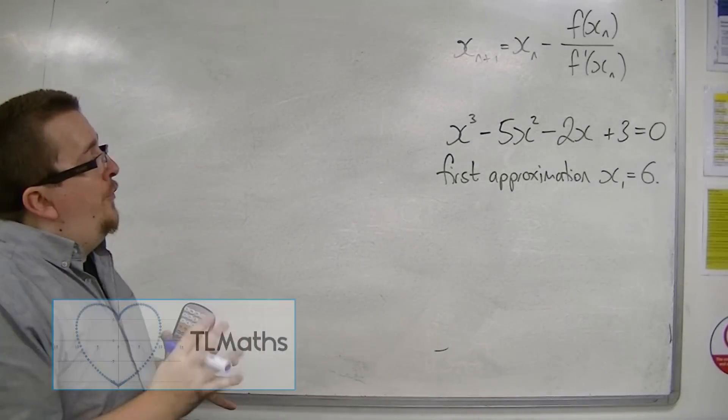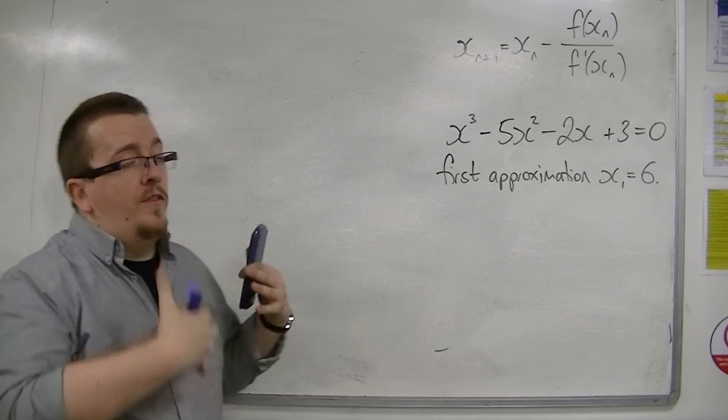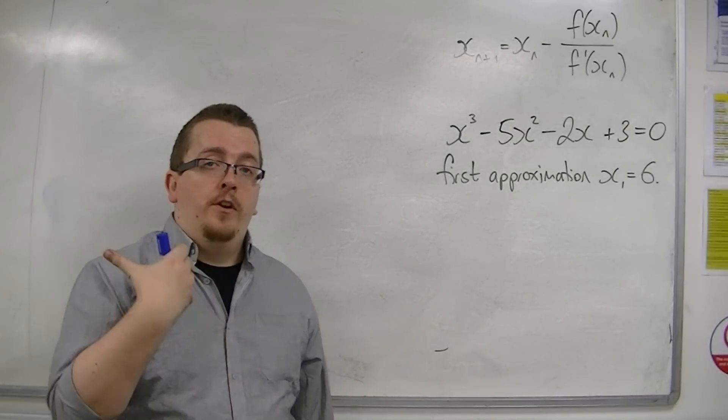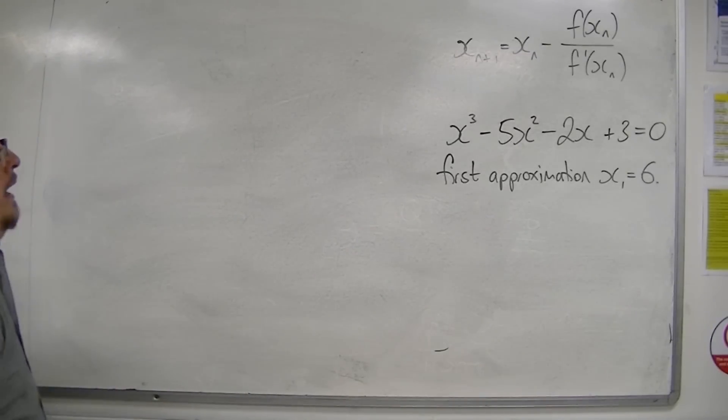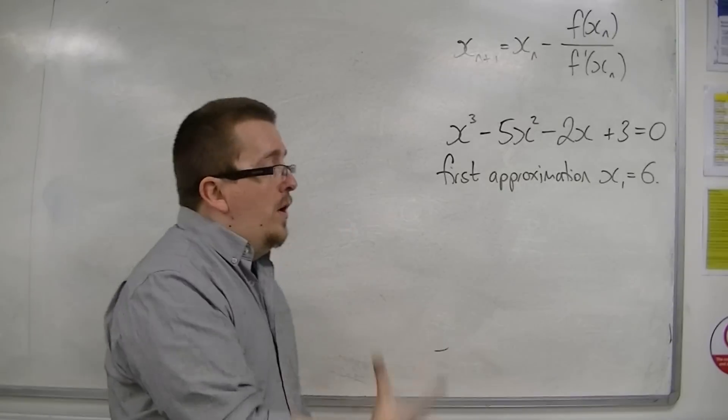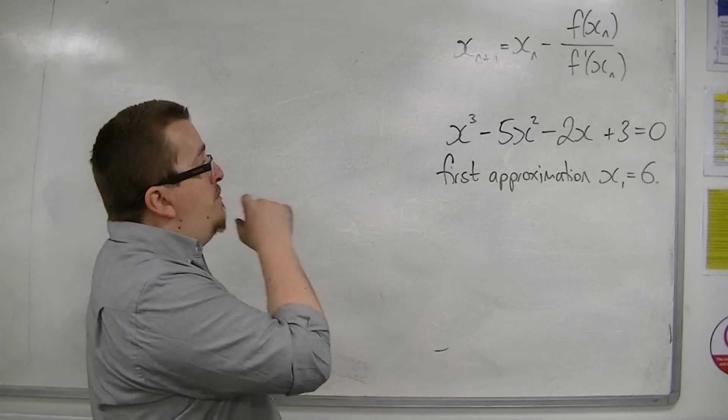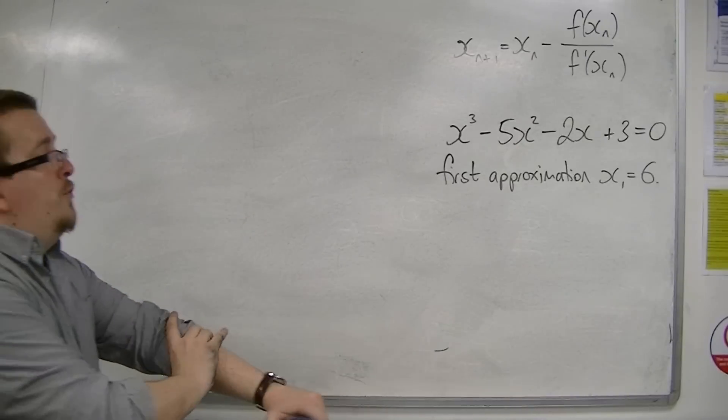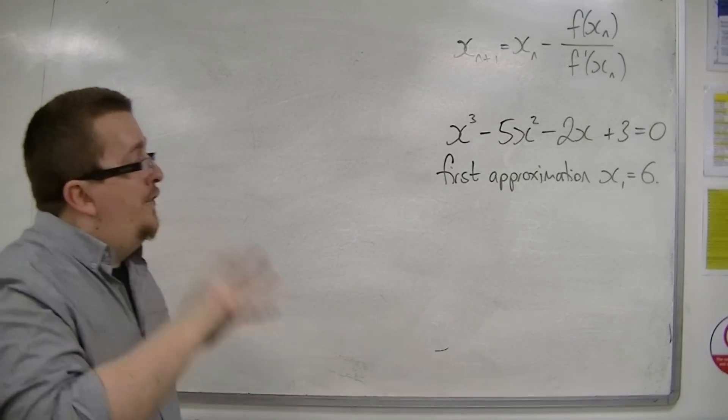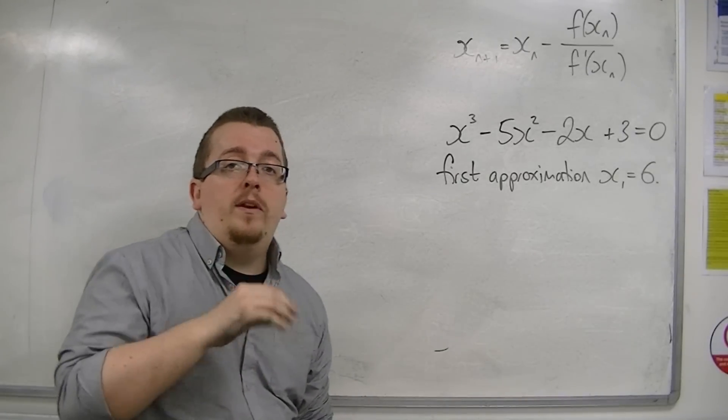Okay, now in this video I'm going to show you how the Newton-Raphson iterative formula works. I'm going to be working with the same equation that we've been working with in this section: x cubed minus 5x squared minus 2x plus 3 equals 0. And our first approximation that we're going to use is x1 is equal to 6.